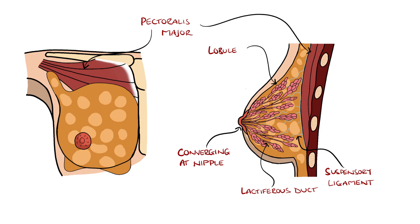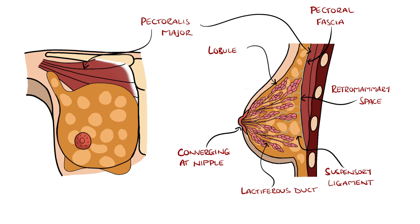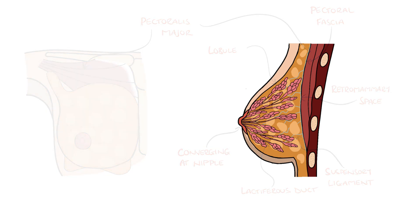The breasts lie anteriorly to the pectoralis major muscle, and between the two lies the pectoral fascia, a flat sheet of connective tissue to which the suspensory ligaments attach. Between the breast and this fascia is the retromammary space, a potential space which is regularly used in reconstructive surgery.